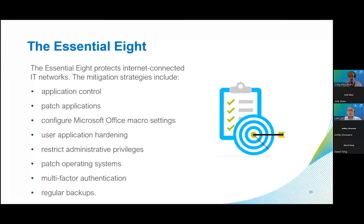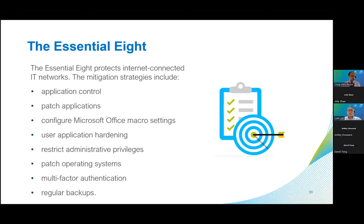Let's talk about the Essential 8 in more detail. While no set of mitigation strategies is guaranteed to protect against all cyber threats, organisations are urged to implement these eight essential mitigation strategies as a baseline to make it harder for adversaries to compromise systems. The Essential 8 works in three ways: protecting you from attacks, limiting the damage in the event of an attack, and giving you a recovery position. The main mitigation strategies are: application control, patch applications, configure Microsoft Office macro settings, user application hardening, restricted administrative privileges, patch operating systems, multi-factor authentication, and regular backups.